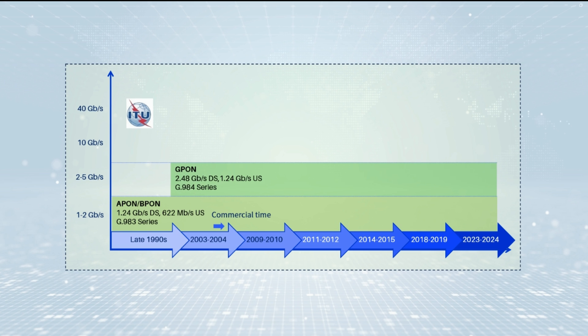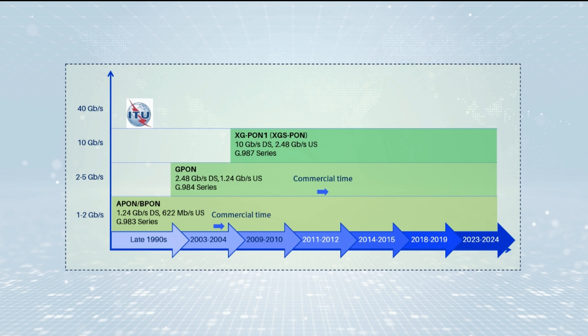In 2003, ITU promulgated the G984 standard, that is GPON, Gigabit Passive Optical Network. In 2008, PON began to evolve to 10 gigabits per second. In 2010, the XG-GPON standard was born, which is the ITU-T G987 series.